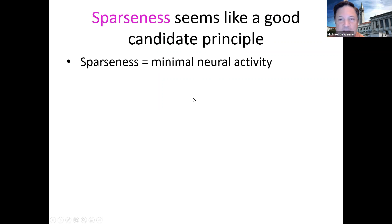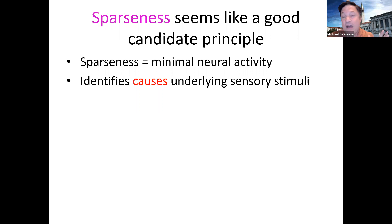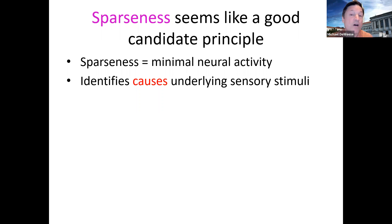Sparseness seems like a good candidate — it means minimal neural activity. You could talk about population sparseness, meaning only a few neurons are active out of the population, or lifetime sparseness, meaning any given neuron isn't very active over time. There's also different kinds of sparseness in terms of how you measure activity: L0 sparseness means strictly zero activity for most neurons; L1 sparseness means the sum of absolute values of activity is small.